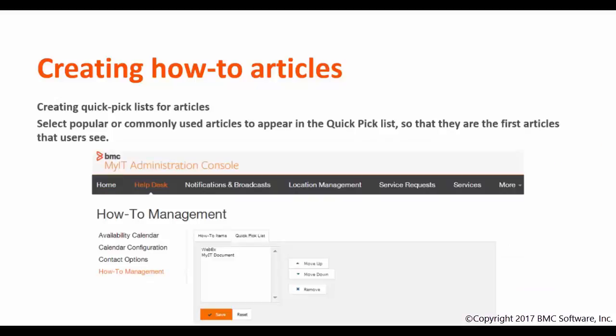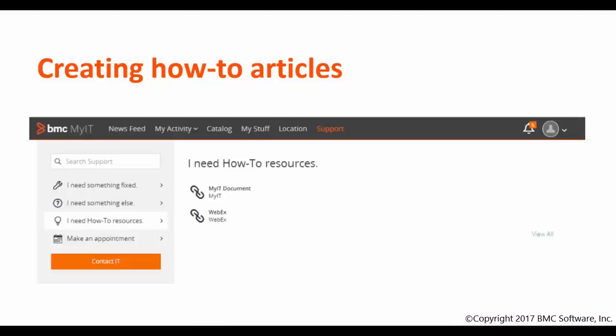You can also create a Quick Pick List for these links. Select any popular or commonly used article and add it to the Quick Pick List. You can also arrange them in a customized order for users to see. This is an example of how you can arrange the articles in order in the iNeed HowTo Resources tab. Now let's take a look at how we can configure this.